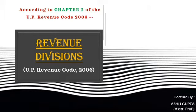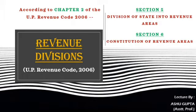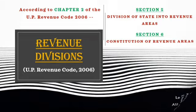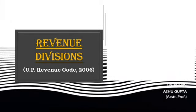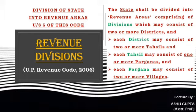The revenue divisions under the UP Revenue Code 2006 are given under Chapter 2 of this code in Sections 5 and 6. The division of the state into revenue areas is covered under Section 5, and the constitution of revenue areas is given under Section 6 of this code.